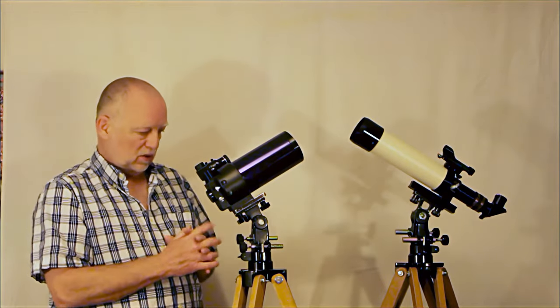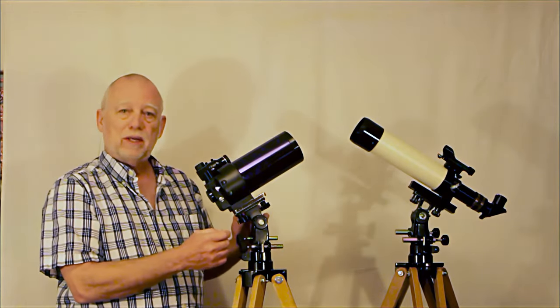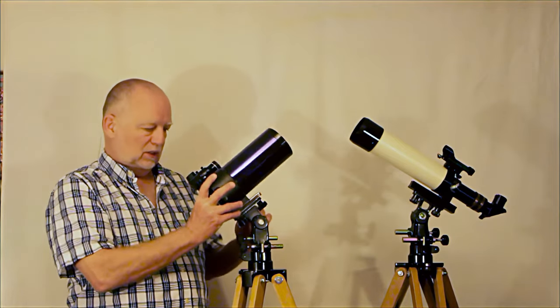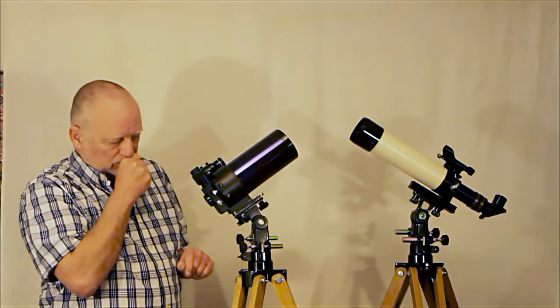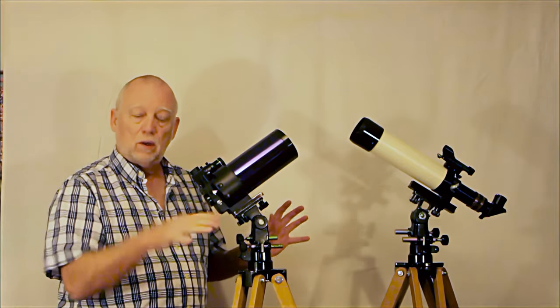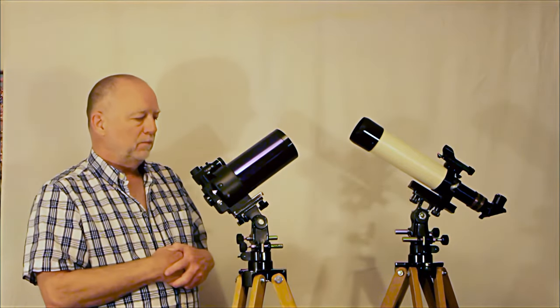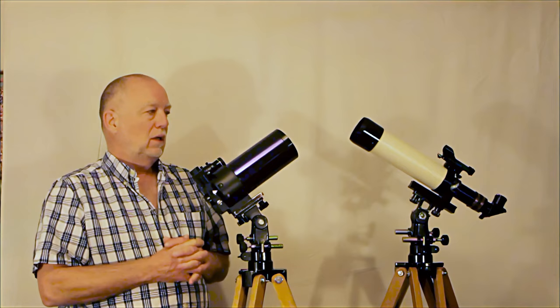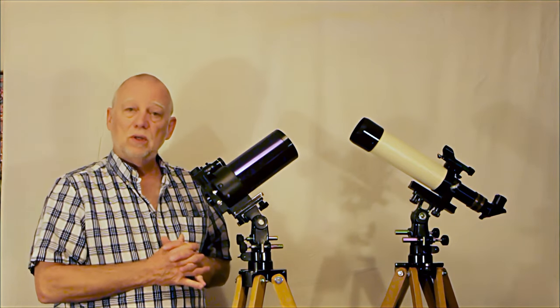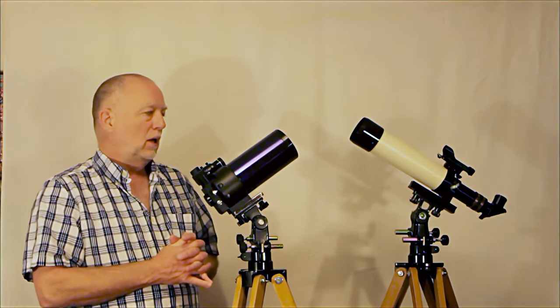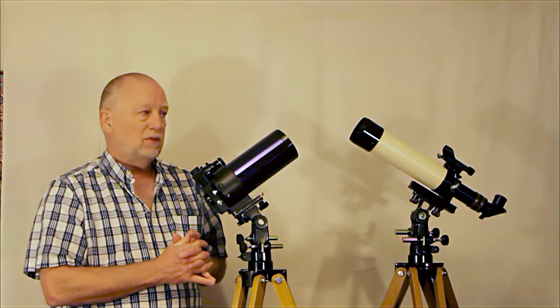And now you've got a real nice little outfit because the Unitron mount makes it very convenient, easy to move around, easy to aim. It's all set up, it's all ready to go, it's already on a tripod. So it's a very convenient, nice little telescope. It gives you 90 millimeters of aperture in a high quality Maksutov design.